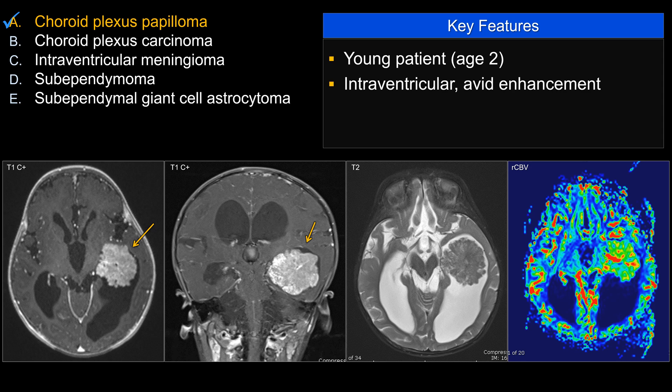There is a large intraventricular lesion with avid enhancement. The pattern of enhancement is relatively homogeneous. There is also moderate hydrocephalus. Notice that the lesion is not in a location that can obstruct — therefore, the hydrocephalus is likely coming from CSF overproduction, which is what choroid plexus papilloma can do.